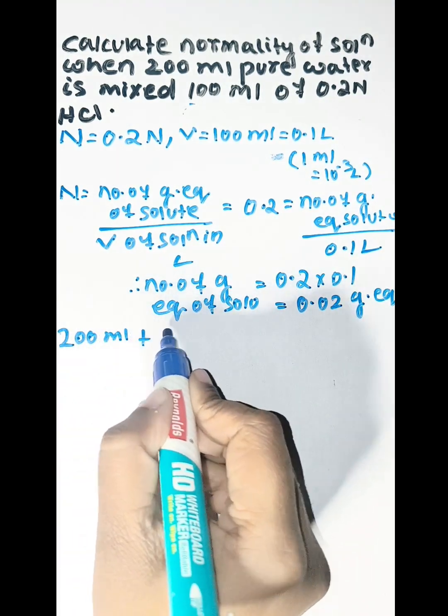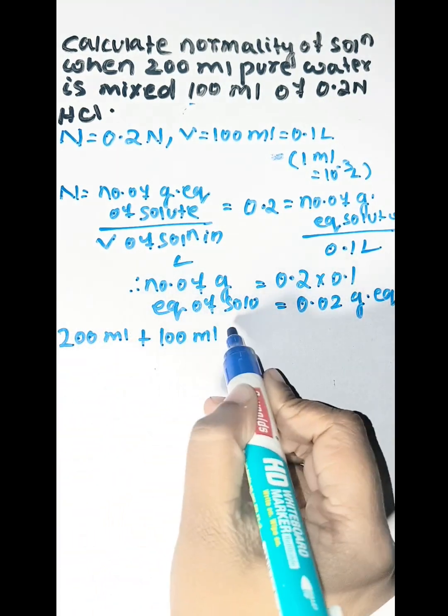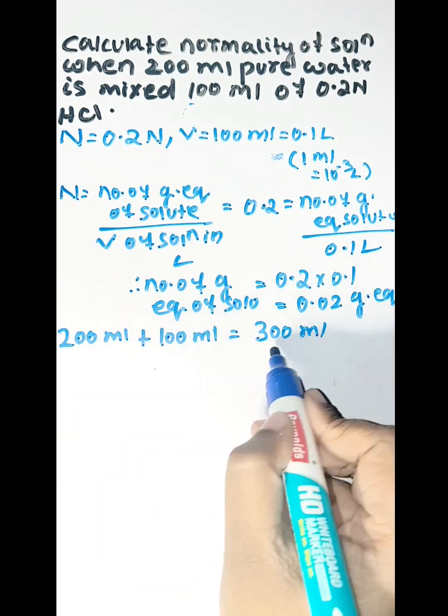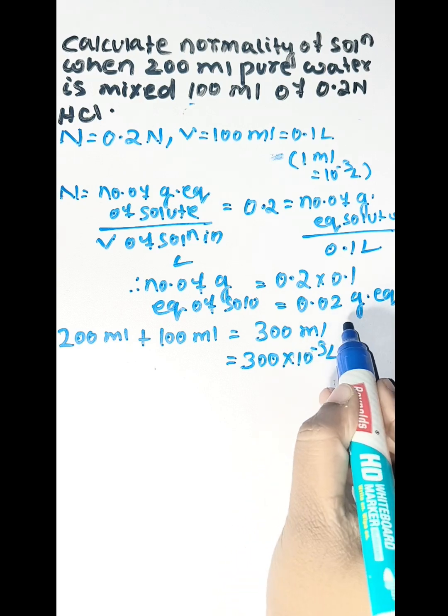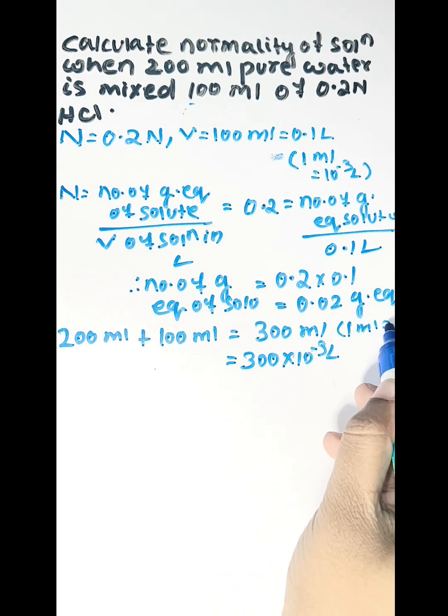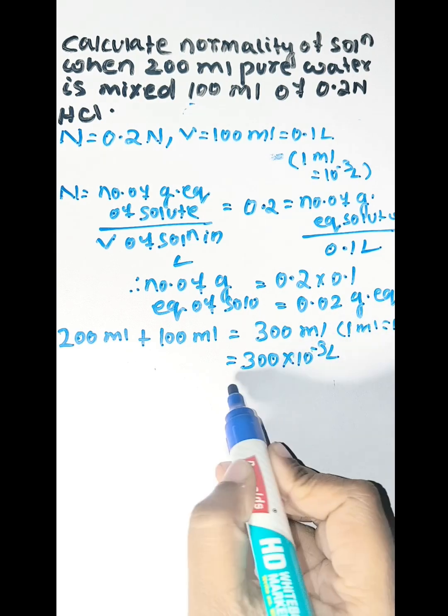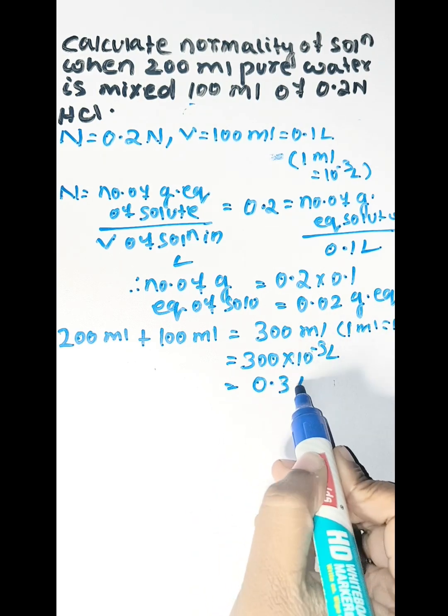200 ml of water is added to 100 ml of solution, so the final volume is 200 + 100 = 300 ml. Since 1 milliliter equals 10 to the power minus 3 liter, this is equal to 0.3 liter.